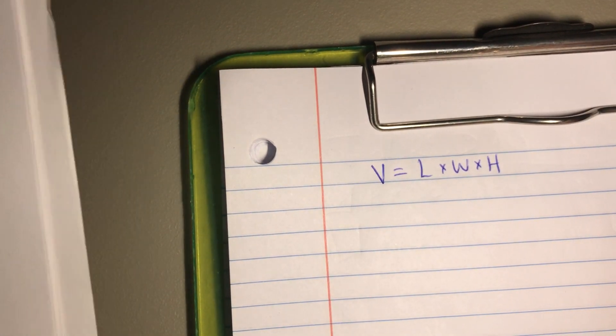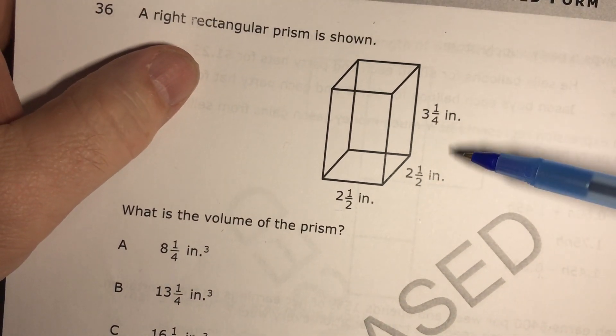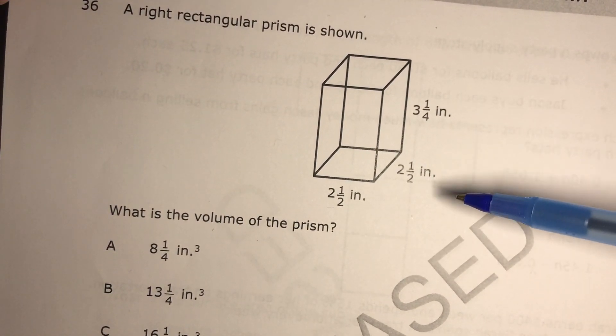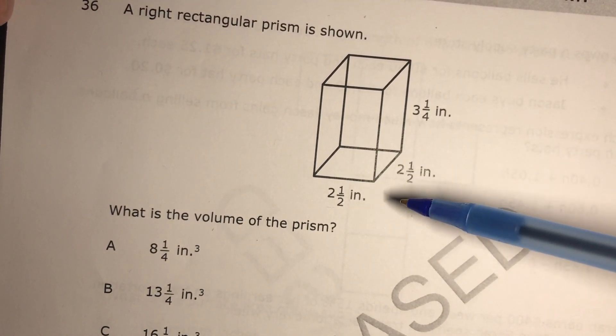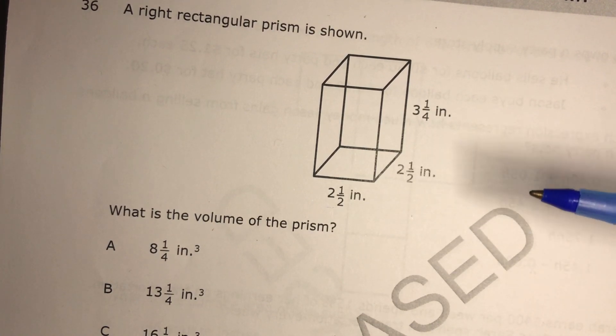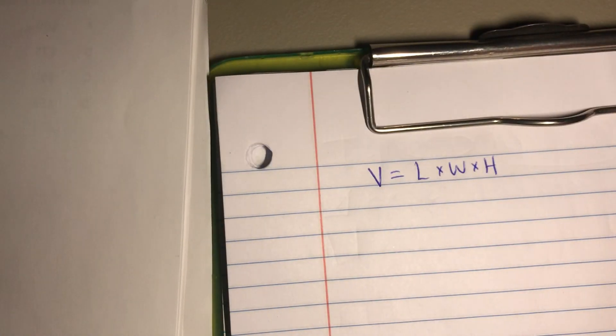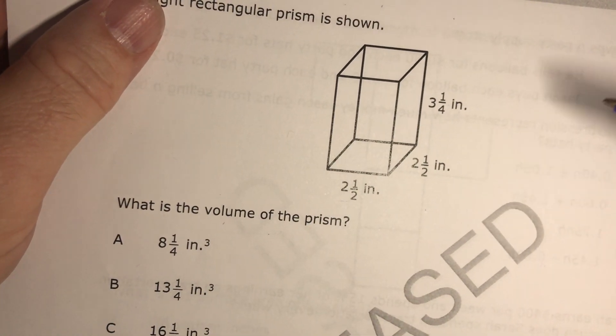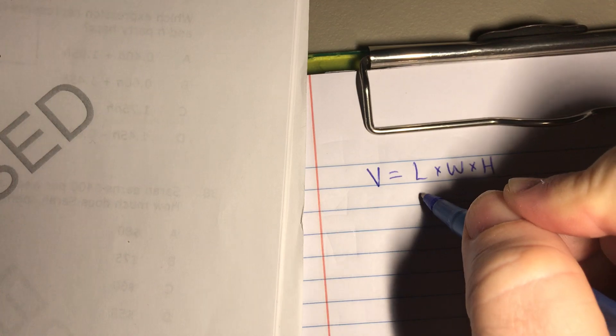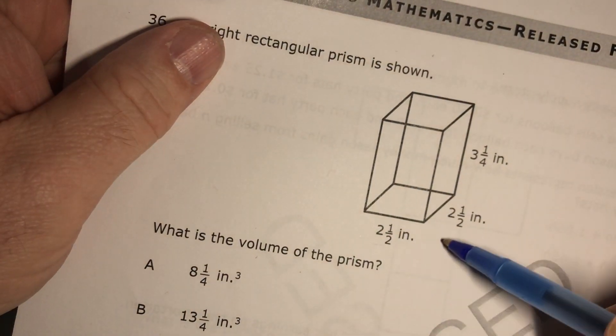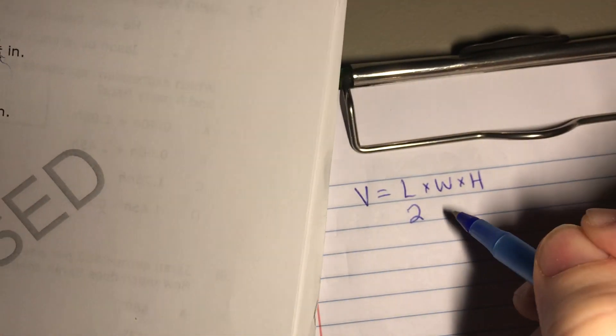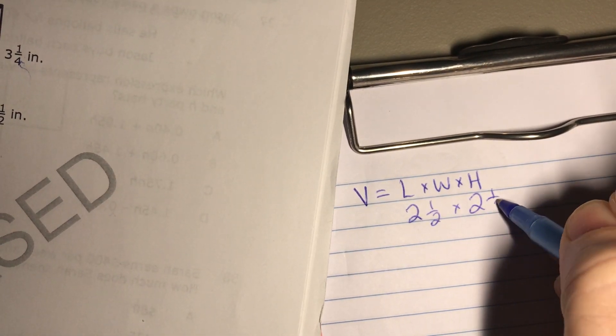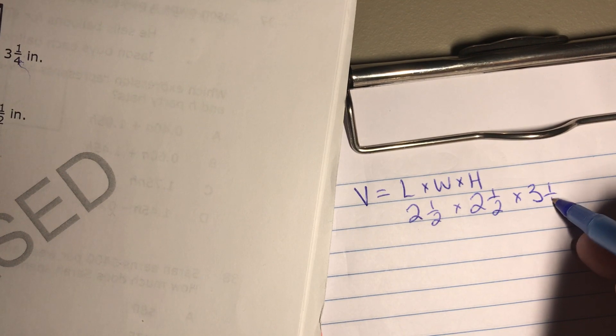Now, if we aren't sure which one is the length, the width, or the height, it's irrelevant because of the fact that the commutative property says I can multiply any two numbers in any way and it comes out to be the same answer. So don't worry about that. Don't fret if you put this first or this first. It doesn't change the result. So I'm just going to put down from left to right the numbers given to me. So we have two and one half times two and one half times three and one fourth.